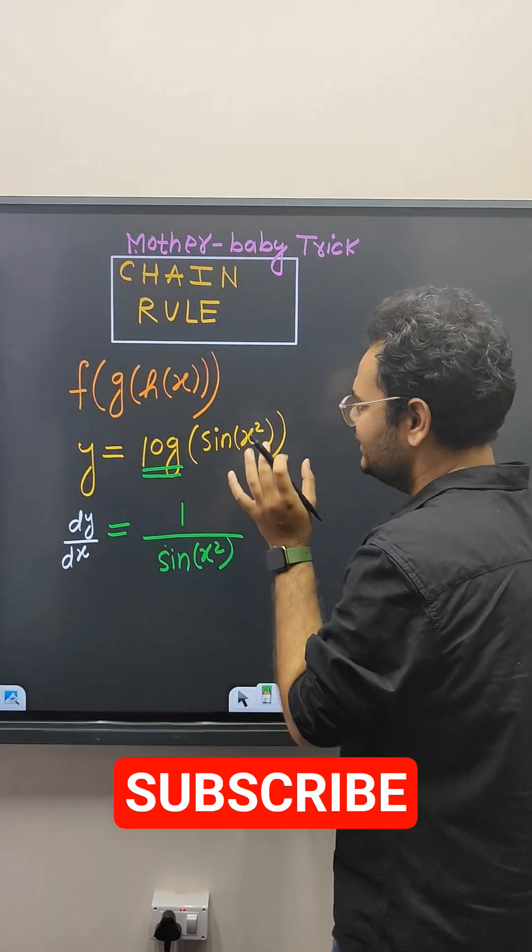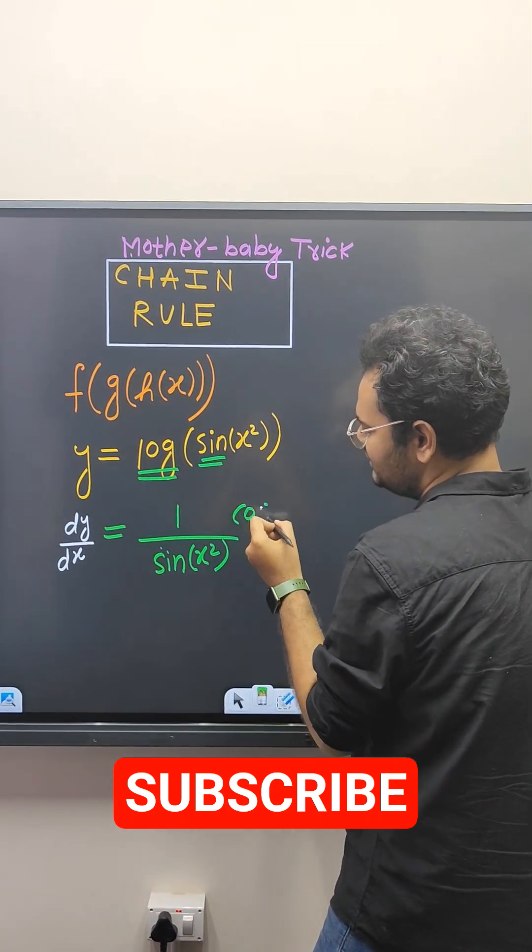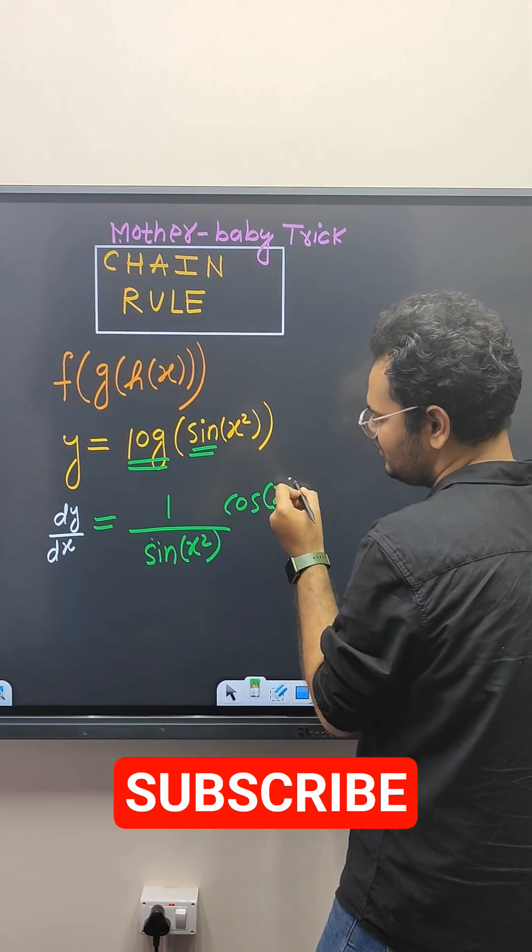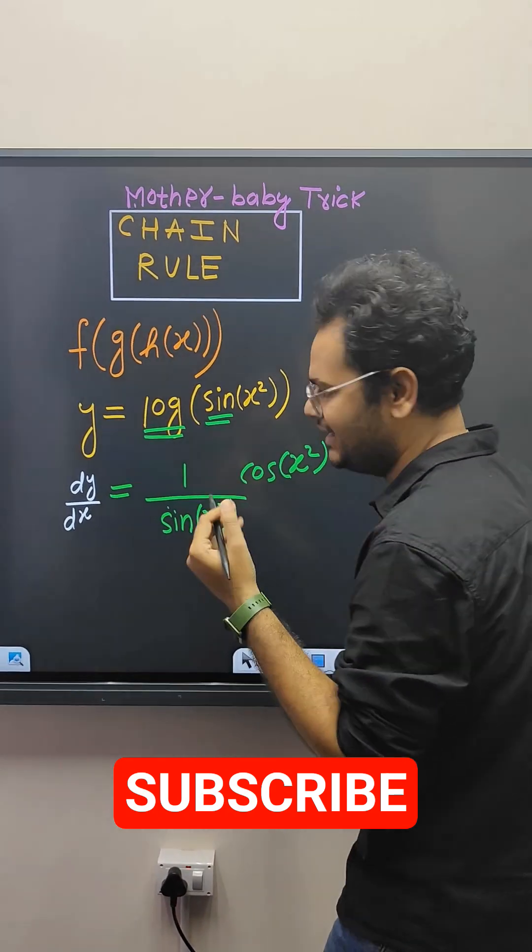I will not touch this baby. When this is my mother function, differentiation of mother sine is cos, which is cos of x square. I will not touch x square because it is a baby of sine.